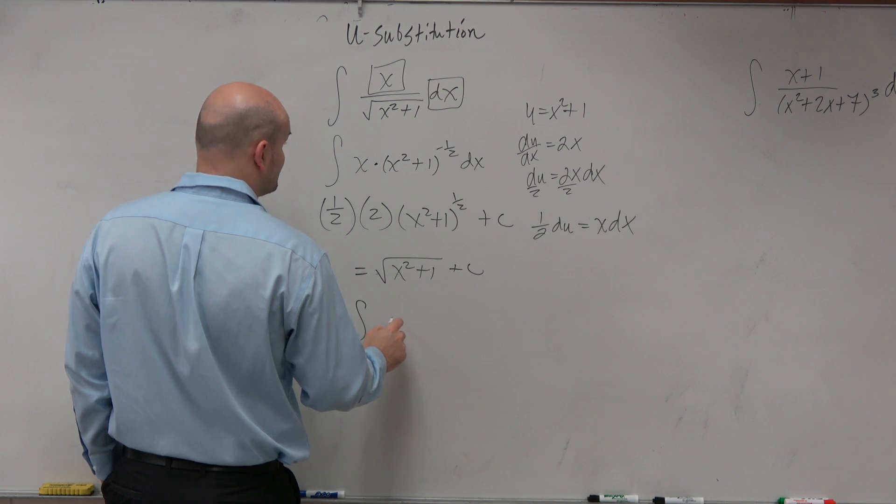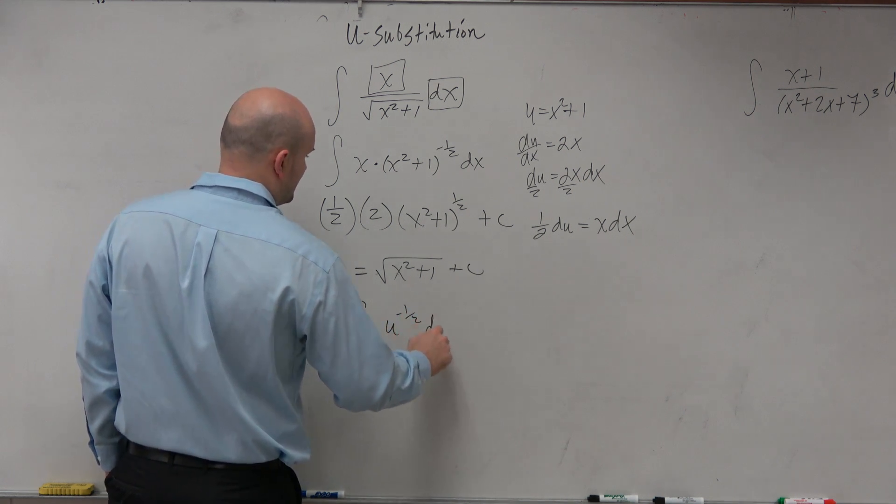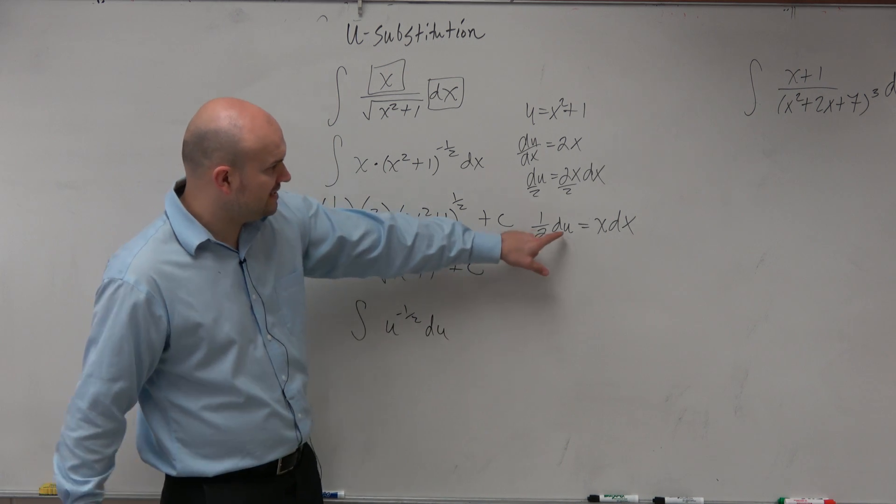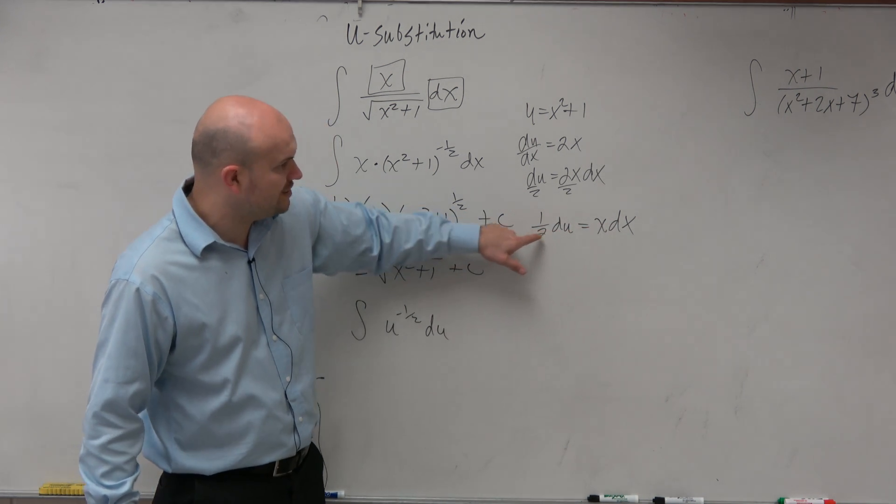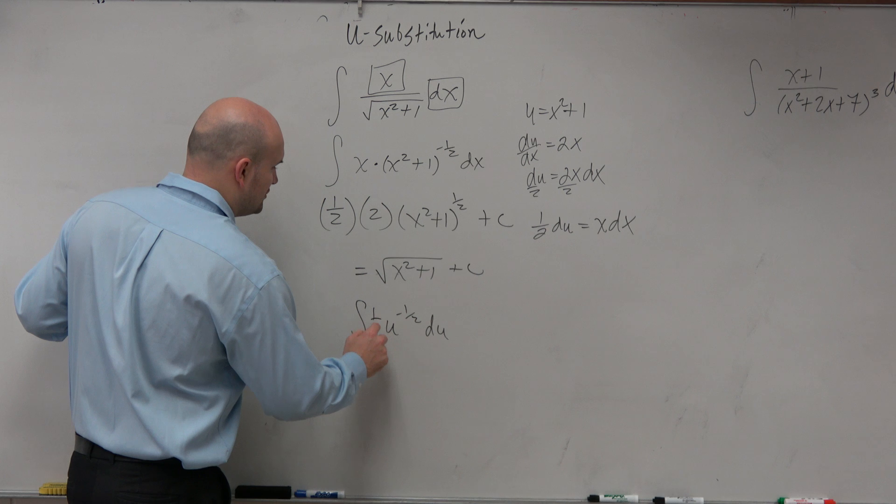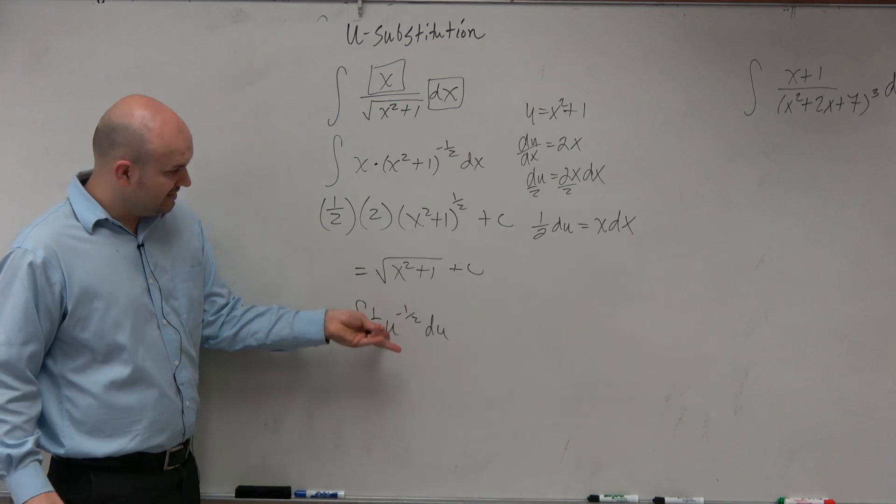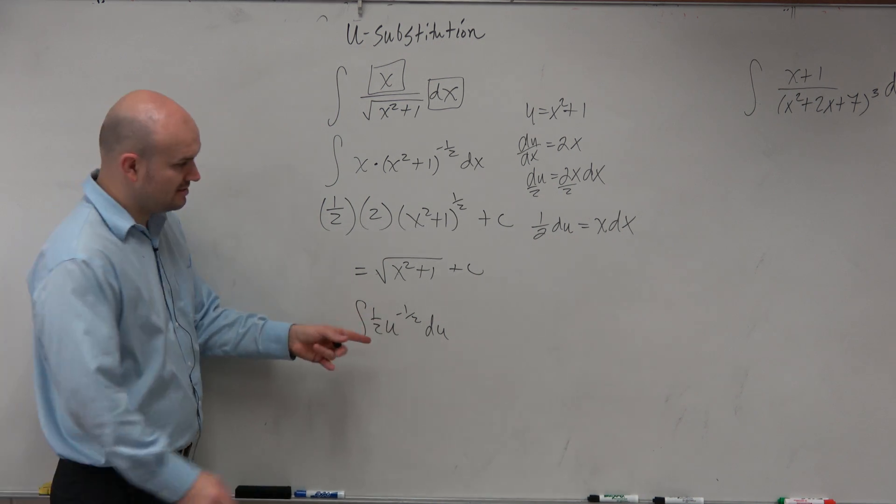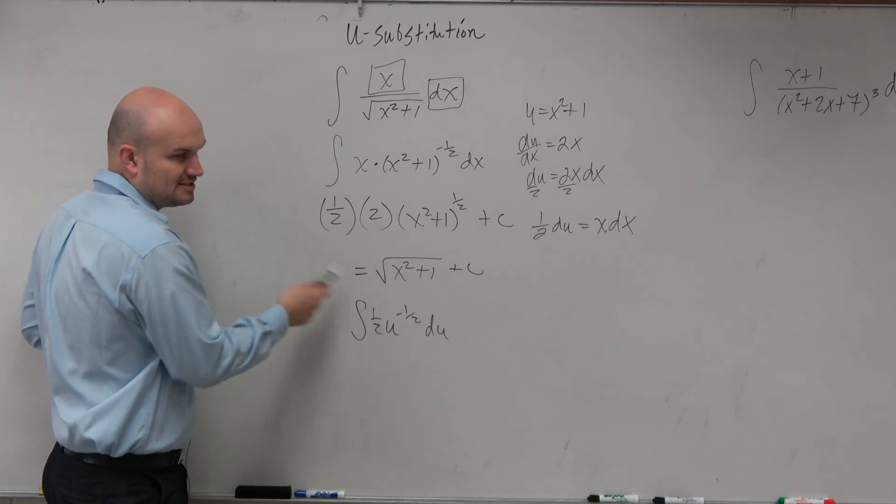It would have u to the negative 1 half du. But again, it's not x dx, it's not du, it's 1 half du. So I'd have to include the 1 half there as well. Then I could integrate this, and I'd get the exact same answer I got there.